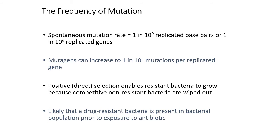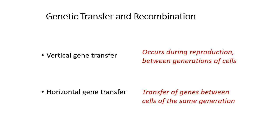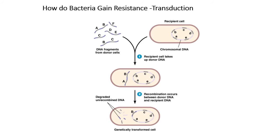In most cases, drug-resistant bacteria are present in the population prior to exposure to antibiotics, and it is antibiotics which then provide a selection pressure for the drug-resistant bacteria to flourish. To recap: vertical gene transfer occurs during reproduction between generations of cells; horizontal gene transfer occurs between cells at the same generation. Transduction is where bacteria pick up small bits of DNA floating around from donor cells or from the surrounding liquid. You can see here fragments of DNA with gene A, gene B, gene C, and so on.